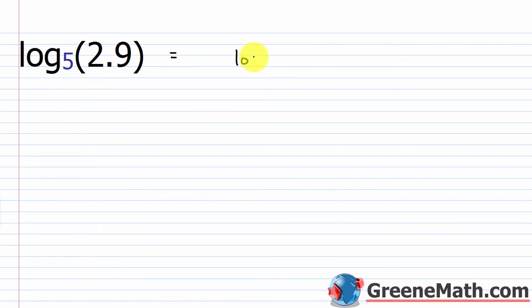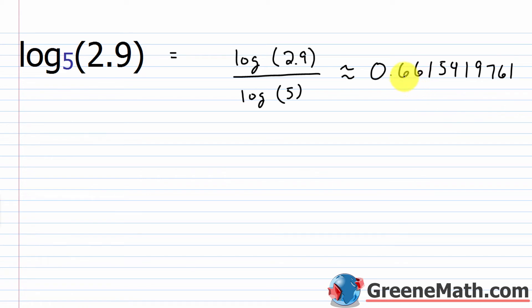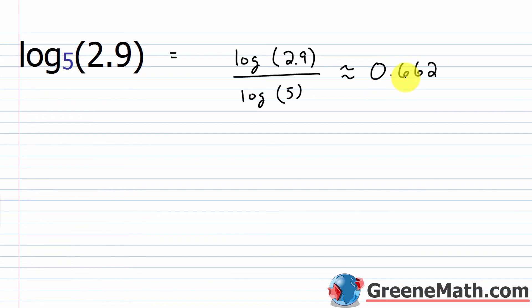For log base 5 of 2.9, this equals log of 2.9 over log of 5. My calculator gives me 0.6615419761. For three decimal places, the digit after the third decimal is 5, so I round up — giving approximately 0.662.